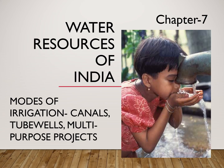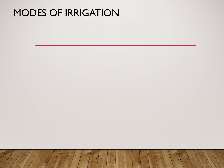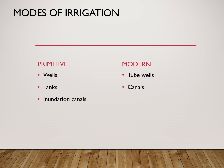Namaste students, welcome to Part 3 of Water Resources of India. In this video we'll be talking about modes of irrigation: canals, tube wells, and multipurpose projects which are used by people to irrigate their fields. Many methods have been applied for irrigating fields. Primitive methods — wells and tanks — have been discussed. This video will talk about inundation canals and then modern methods of irrigation.